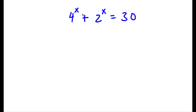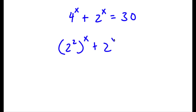Alright, so I have 4 to the power of x plus 2 to the power of x is equal to 30. Now, 4 here is the same thing as 2 squared. So now I have 2 squared to the power of x plus 2 to the power of x is equal to 30.